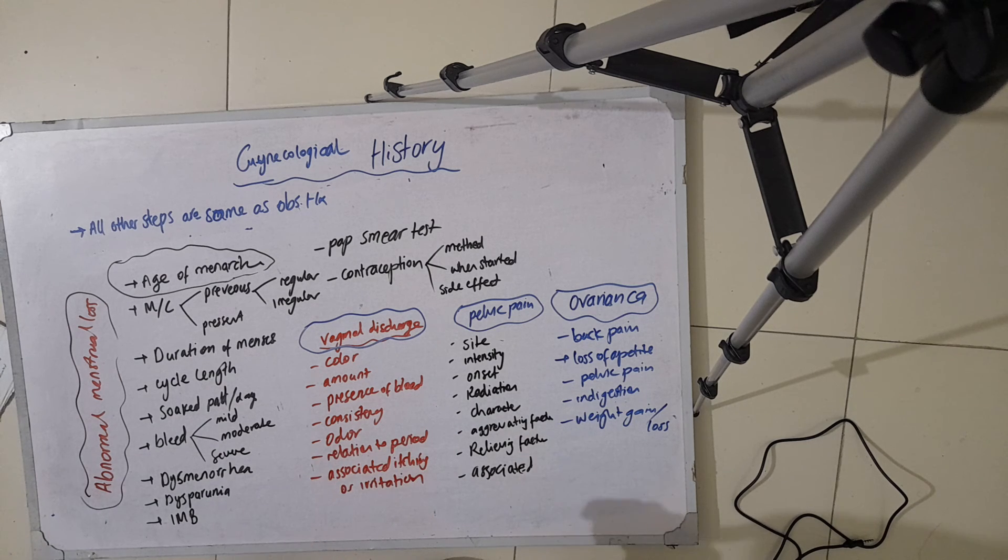Lastly, in the personal history, you ask about the appetite, weight, history of smoking, alcohol intake, and also about the type of contraception they are using. So this was all about the history taking of both gynecological and obstetric.